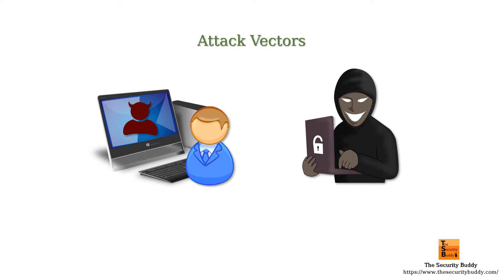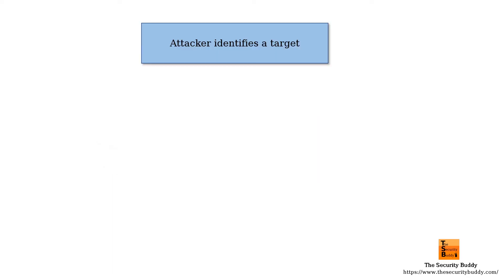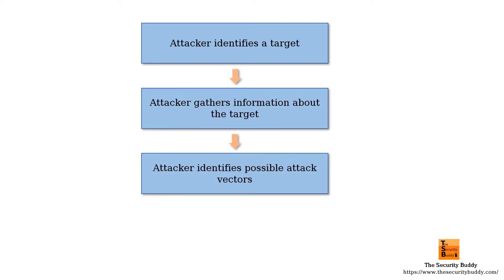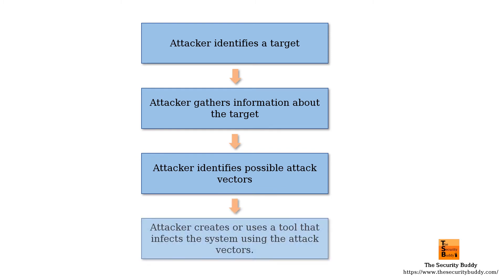In a typical cyber attack, an attacker first identifies a target, gathers information about the target, identifies possible attack vectors, and then creates or uses a tool that infects the system using those attack vectors.